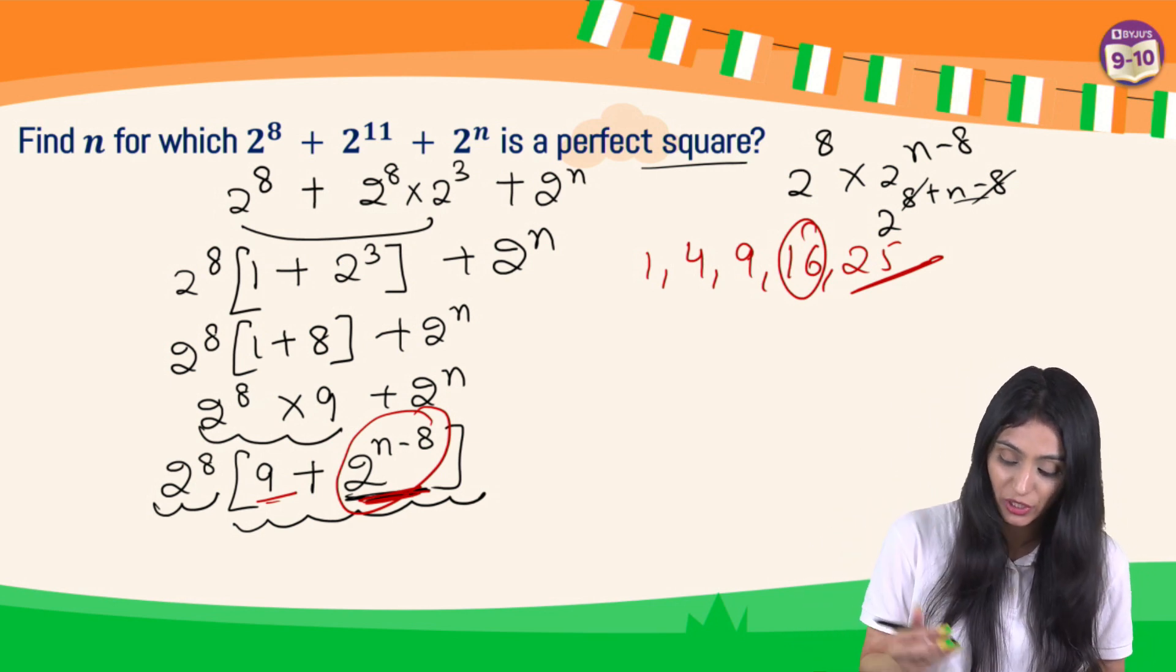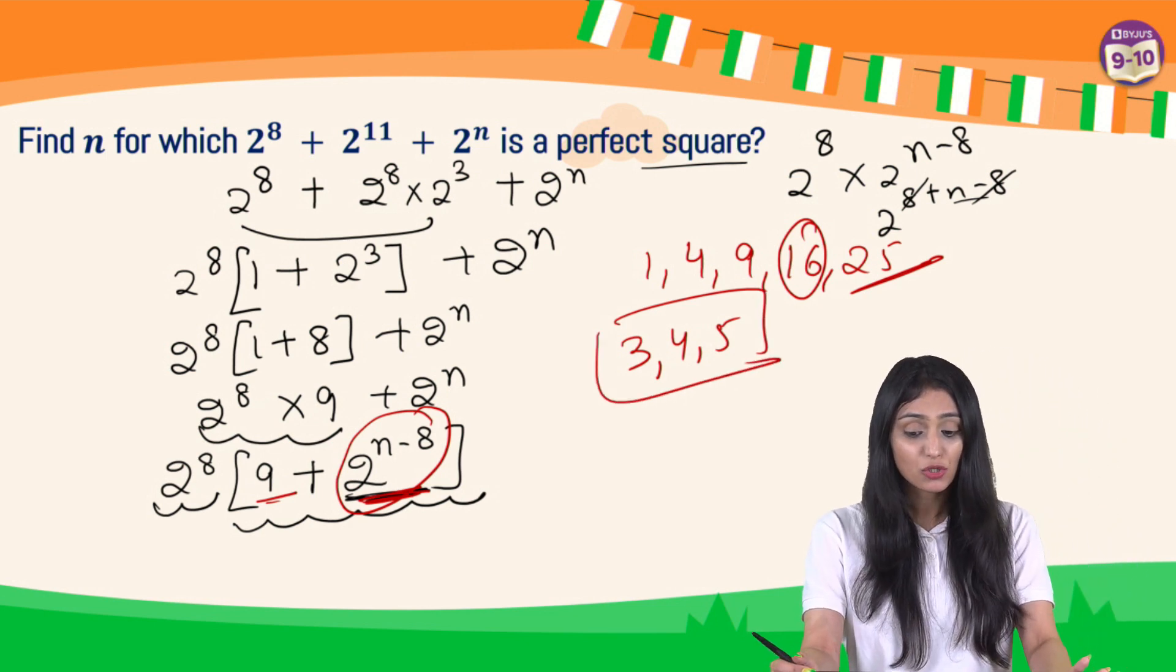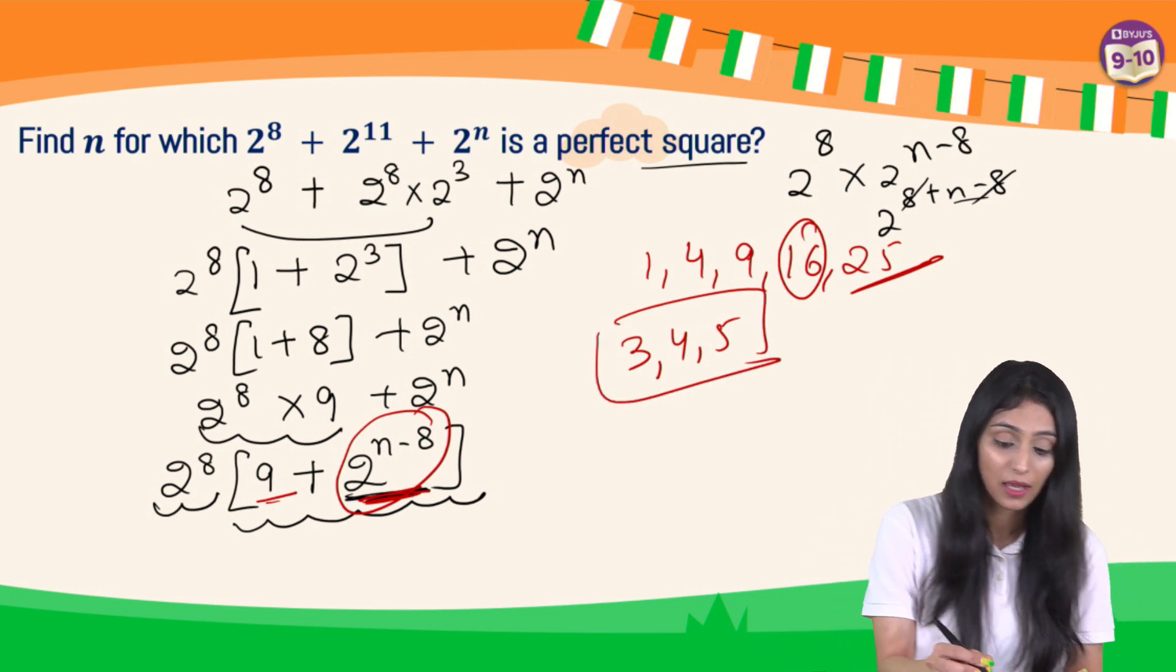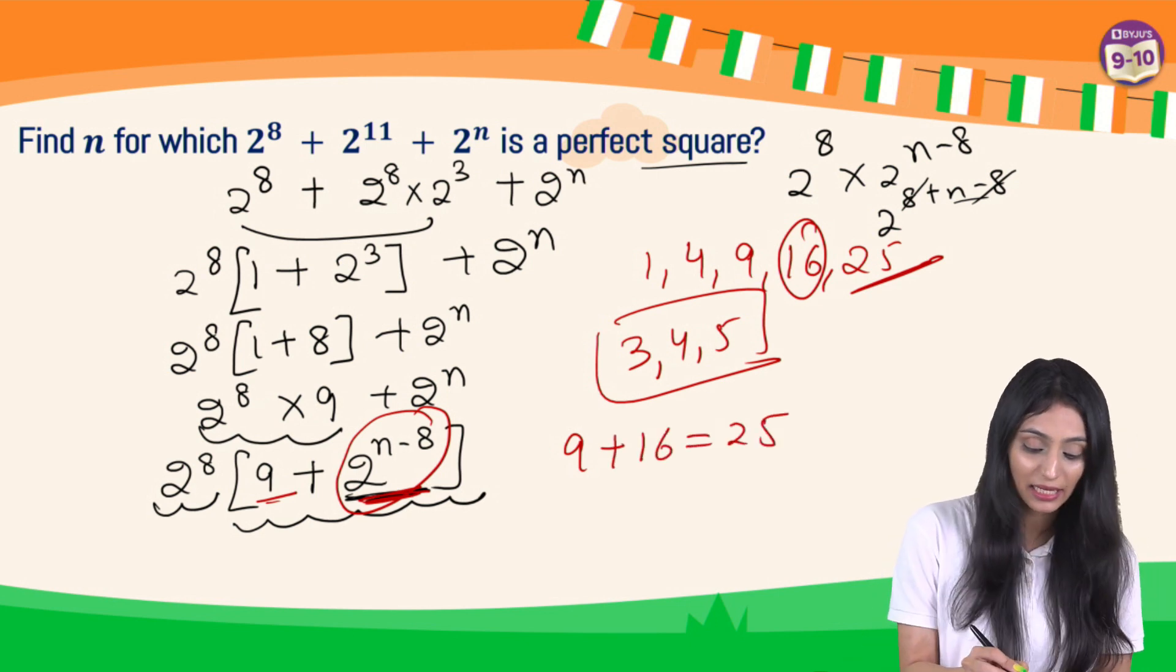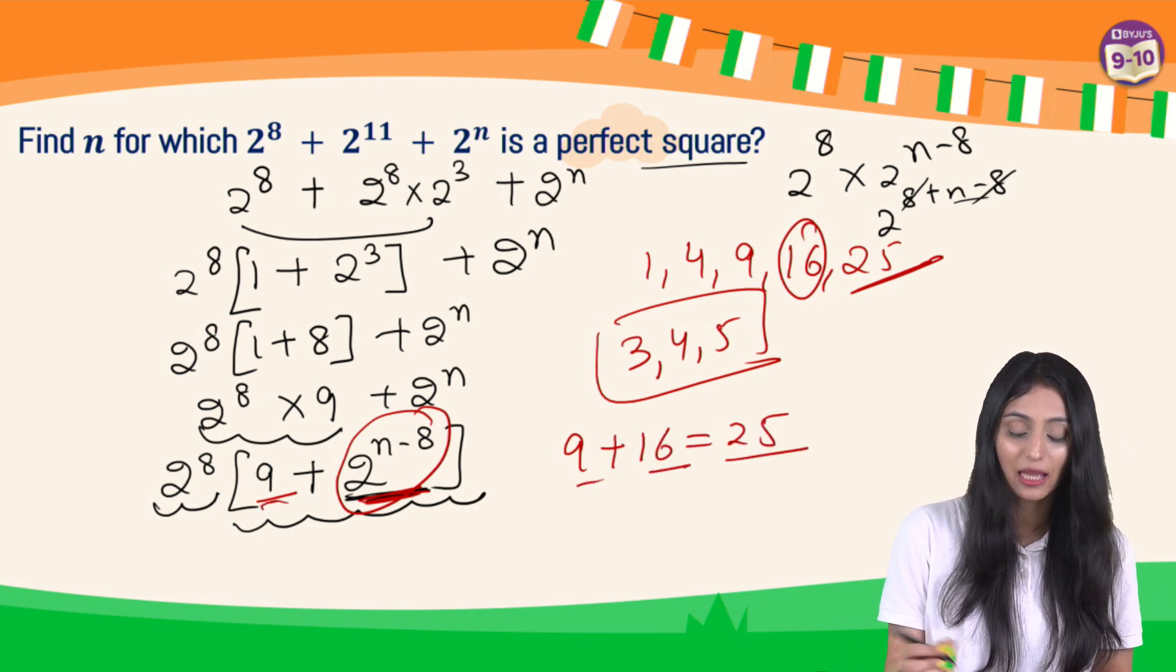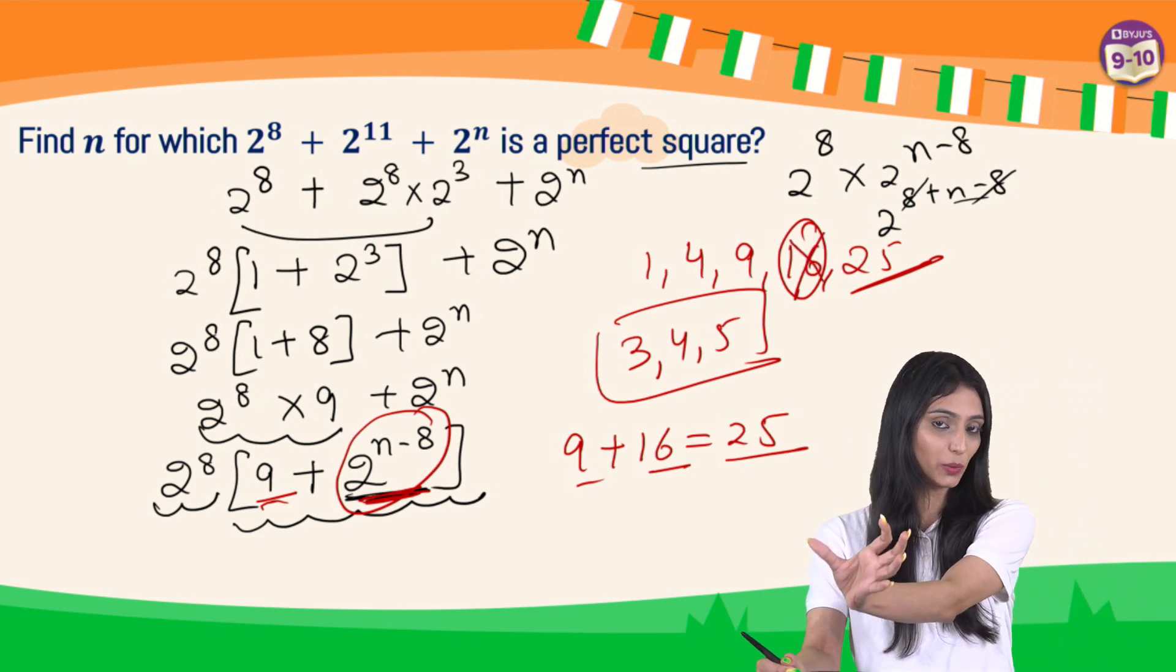We know about the Pythagorean triplets. Pythagorean triplets are 3, 4, and 5, correct? These are Pythagorean triplets. So using this I can say one thing. This is 9 plus 16 gives us 25, right. 9 is already there. If I get 16, I'll get 25, which is a perfect square. That's why we are neglecting 16 from here. Total is going to be 25.